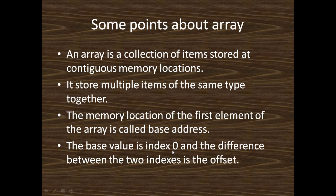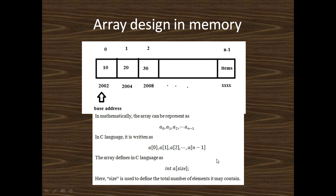The base value is index 0, and the difference between two indexes is called the offset. For example, in an array with elements 10, 20, 30 and so on, the indexes are 0, 1, 2, 3, 4, and the memory addresses are 200, 202, 204, 208. The first address of the array is called the base address.